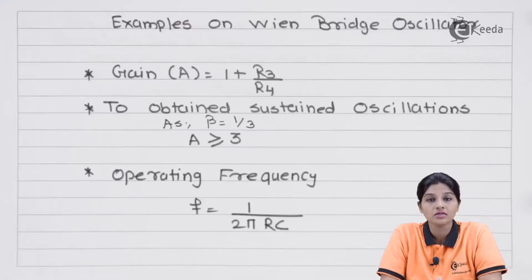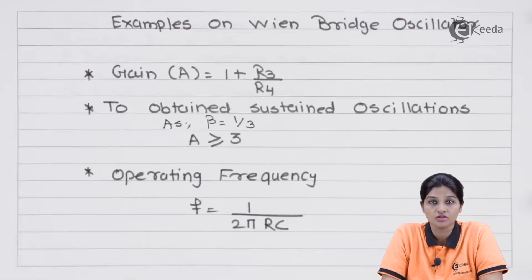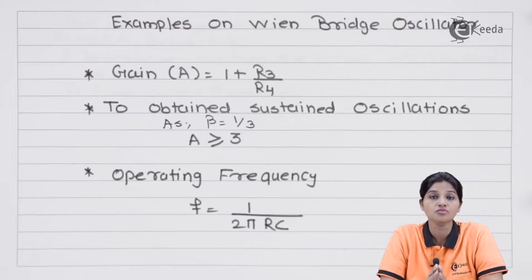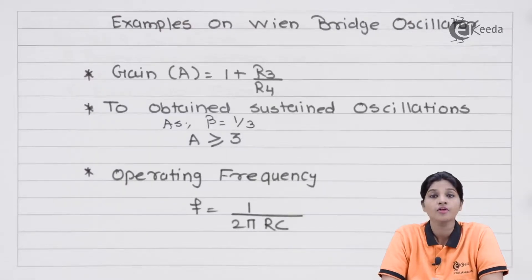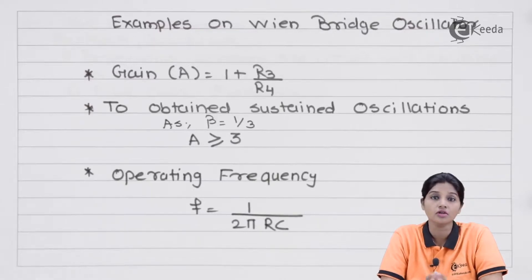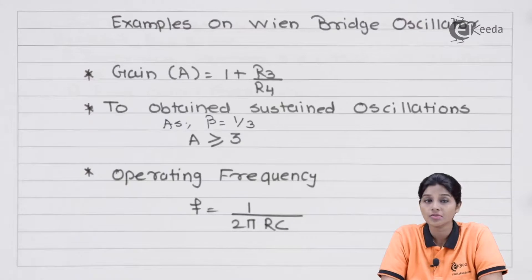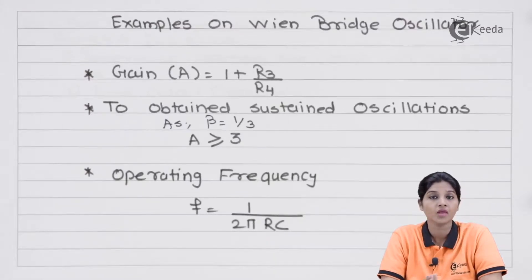We know that an oscillator is an AC signal generator circuit. It is basically an amplifier which uses positive feedback and produces output oscillations without any AC input signal. For obtaining sustained oscillation, the circuit is required to have a power supply. So as long as the DC power supply is available, the oscillator circuit produces output using positive feedback.